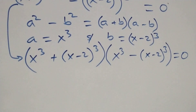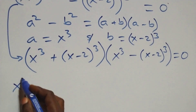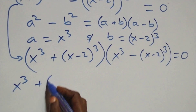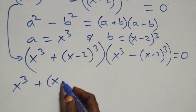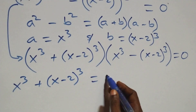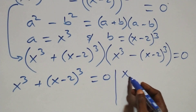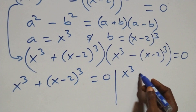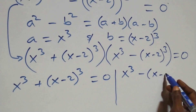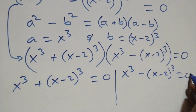We now have two possible cases. The first case: x raised to the power 3 plus x minus 2 raised to the power 3 equals 0. The second case: x raised to the power 3 minus x minus 2 raised to the power 3 equals 0.